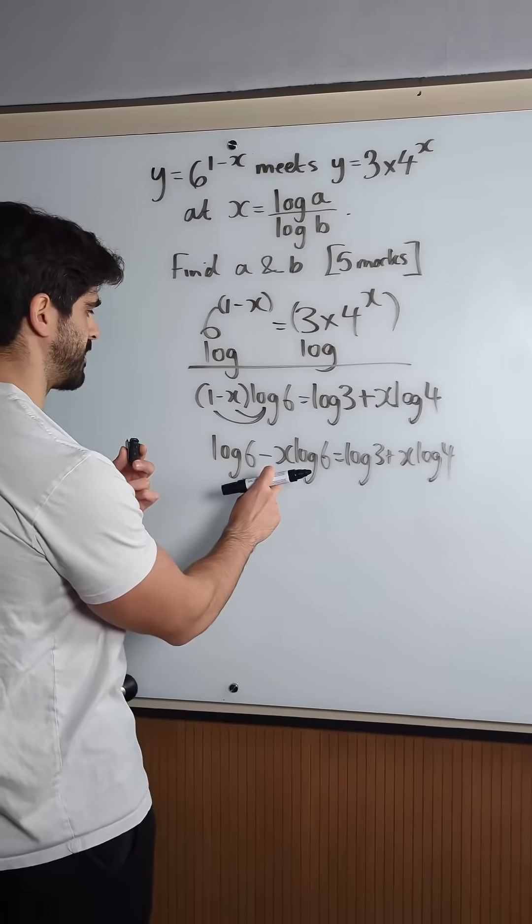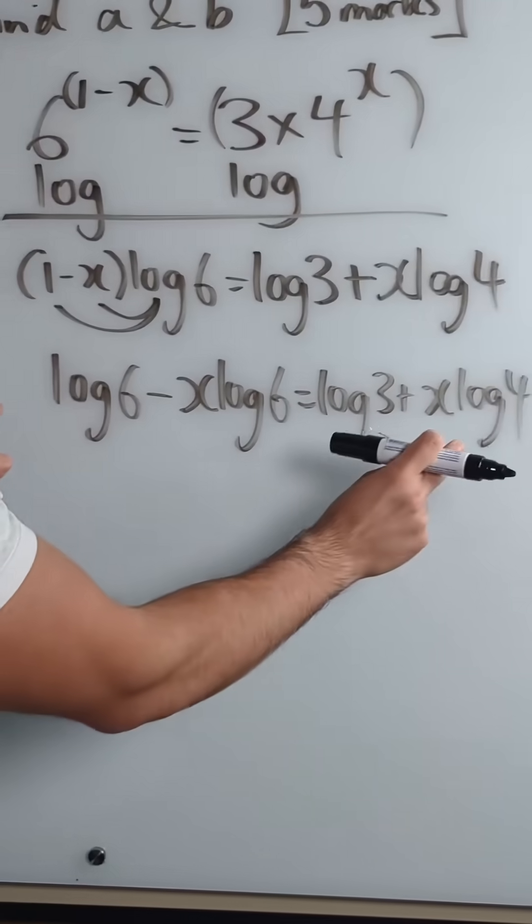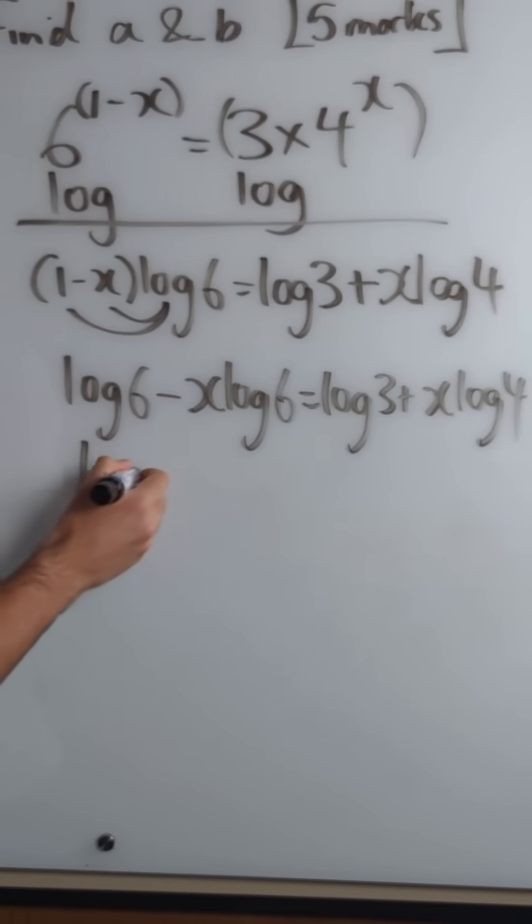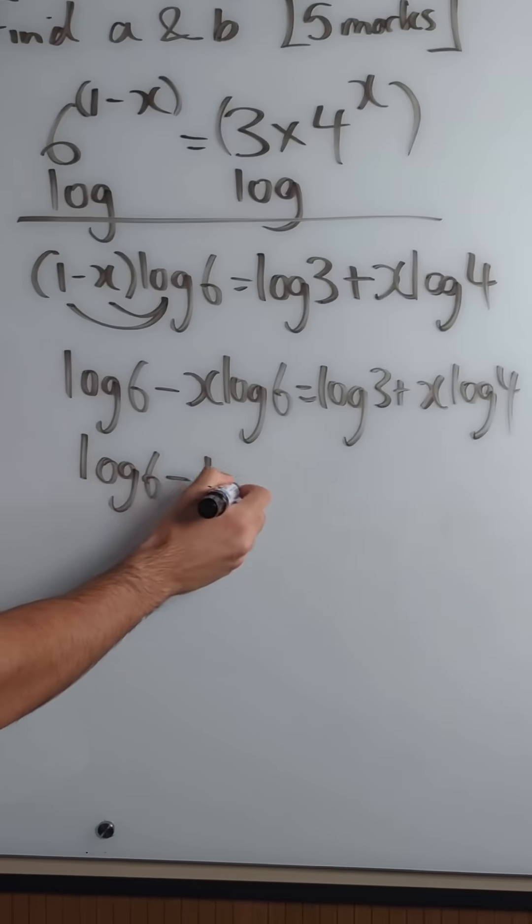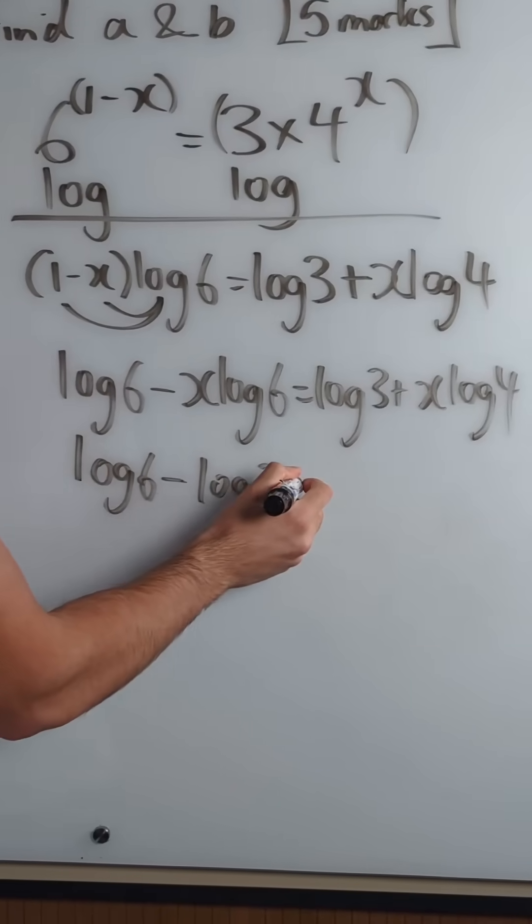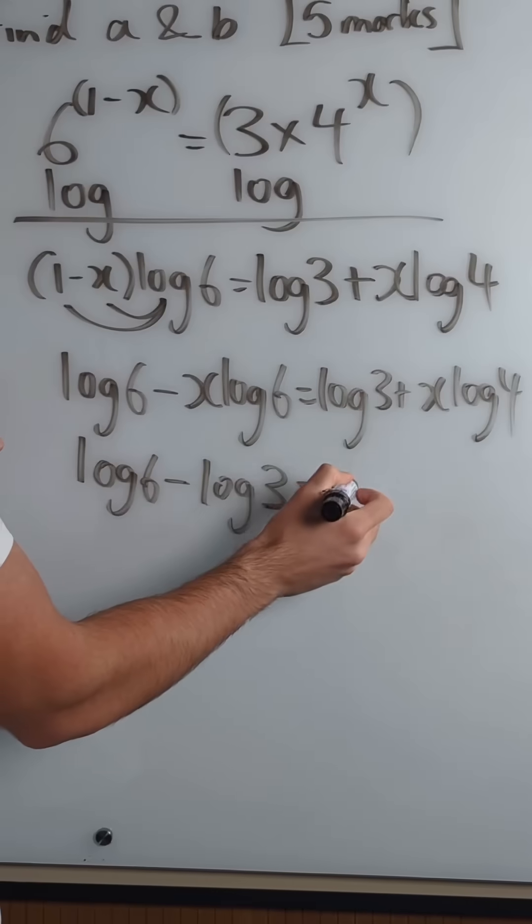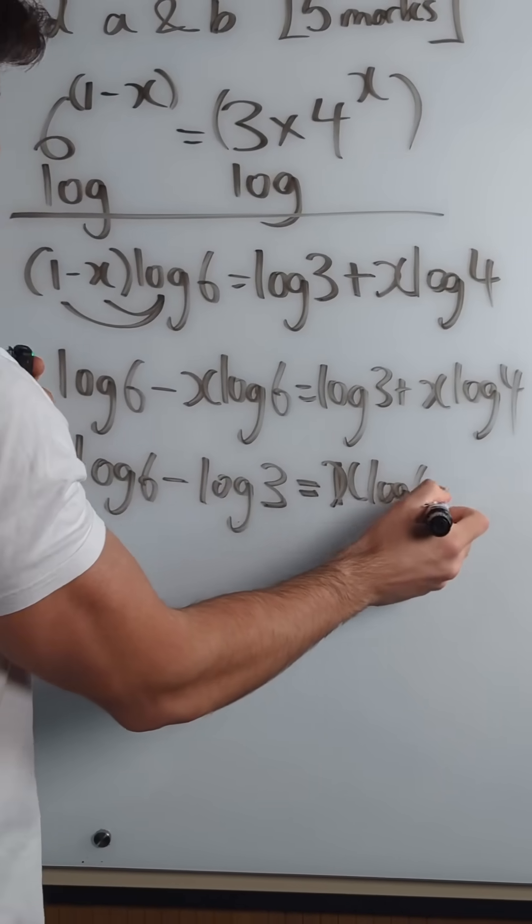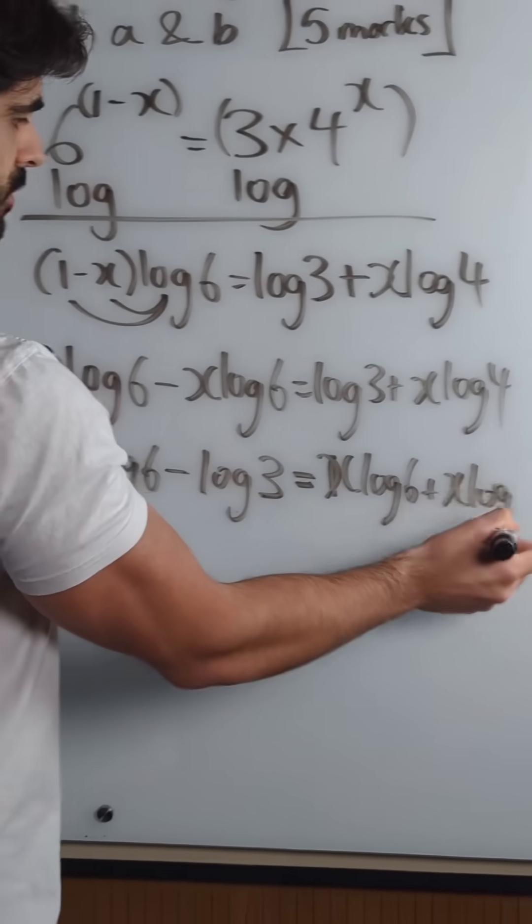Okay now let's bring the logs together. That I'm going to move here, log 3 is going to come here. So I'm going to get log 6 minus log 3 equals, moving that over, x log 6 plus x log 4.